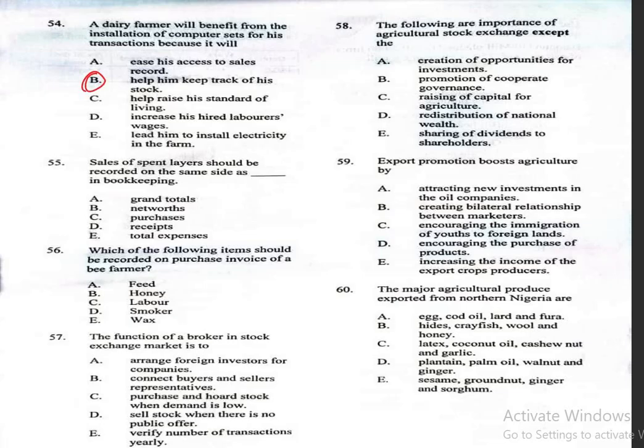Question 55: Sales of spent layers should be recorded on the same side as what in bookkeeping? The correct answer is D, receipts — not grant totals, net worth, purchases, or total expenses.